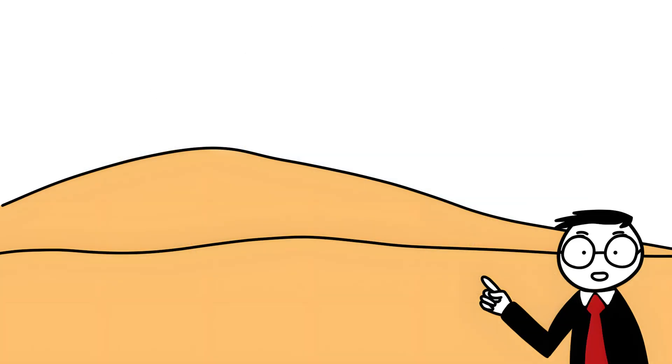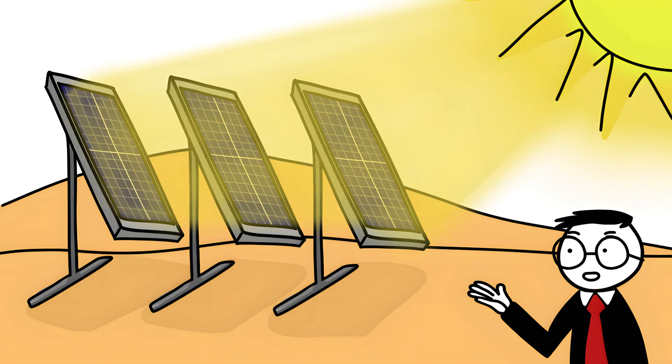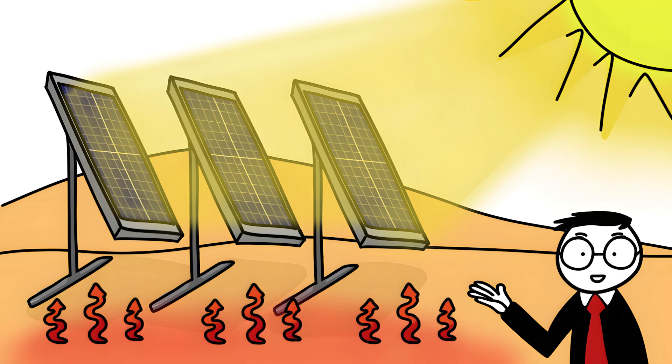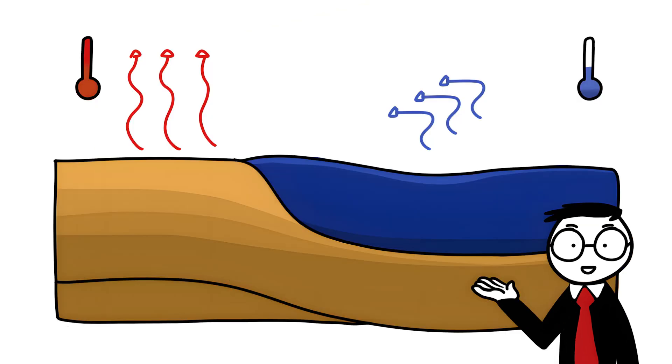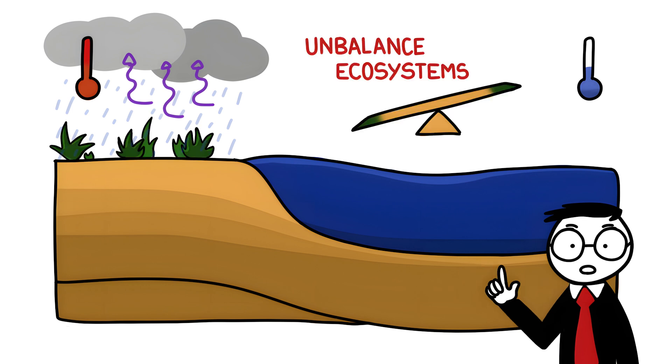But we would also face some ecological problems with our project. The dark solar panels would absorb many times more sunlight than light-colored desert sand normally absorbs. This would significantly increase the surface temperature in the Sahara. The greater the temperature difference between sea and land, the more likely it is to rain on land. Our solar surfaces could therefore lead to vegetation taking over the Sahara and ecosystems in the desert being weakened by the major change.